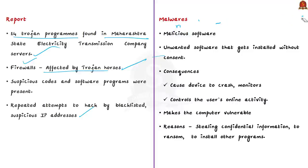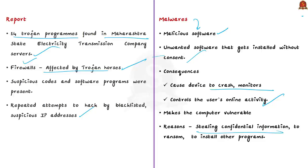Malware is short for malicious software and is used by cyber criminals to harm a computer system or network. It includes unwanted software installed without the user's consent, with the potential to cause devices to crash, monitor and control online activity, make computers vulnerable to viruses, and expose them to unwanted ads. Cyber criminals use malware for many different reasons — commonly for stealing confidential information, demanding ransom, or installing other programs without the user's knowledge. Types of malware include Trojans, backdoors, and ransomware, used to steal information, resources, or money.